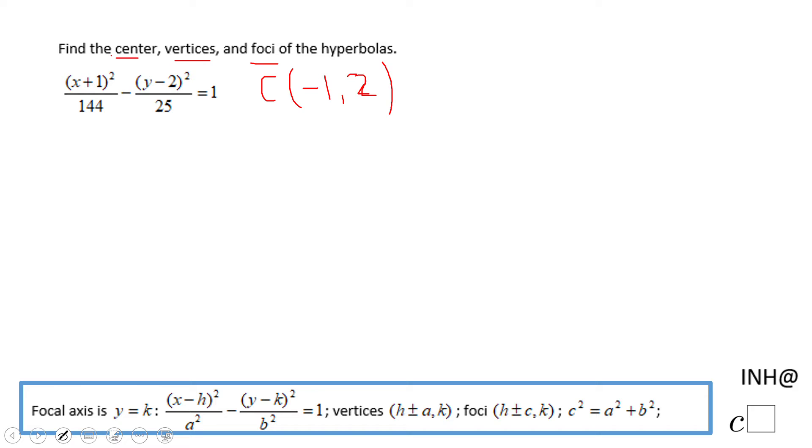For finding the vertices, we need to first look to the form. This is like, you notice this form here. So that tells us we have y equals k, y equals two as a focal axis. And then we can answer very algebraically to the vertices because from this point, the center, we're going to have to move a units left and right to get these vertices.